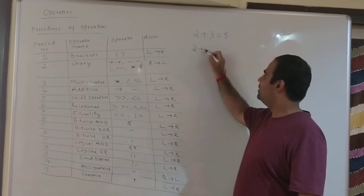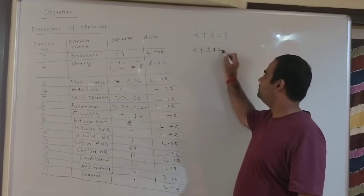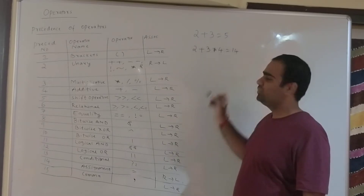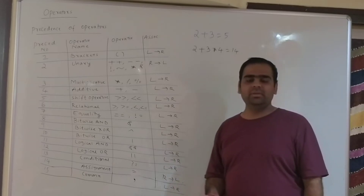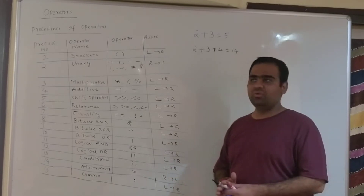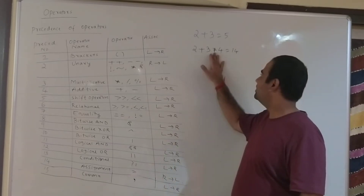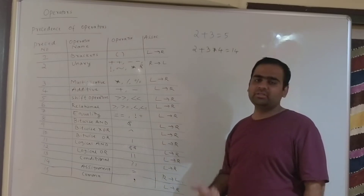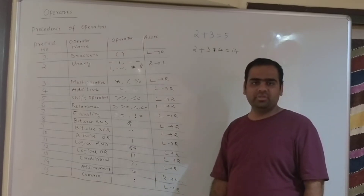If we write 2 plus 3 into 4, the answer is 14, while multiplication is being applied first over addition, even though it appears later in the expression, since multiplication has the highest precedence.